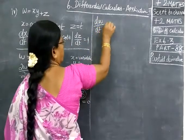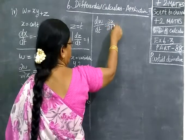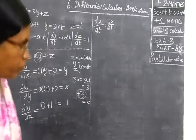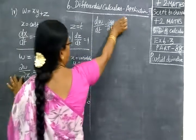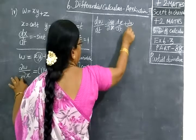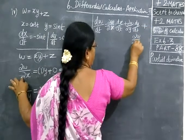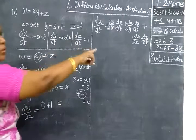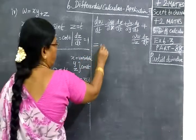dw by dt. So, ∂w by ∂x times dx by dt. So in that way, ∂w by ∂y. So in that way, ∂w by ∂z.